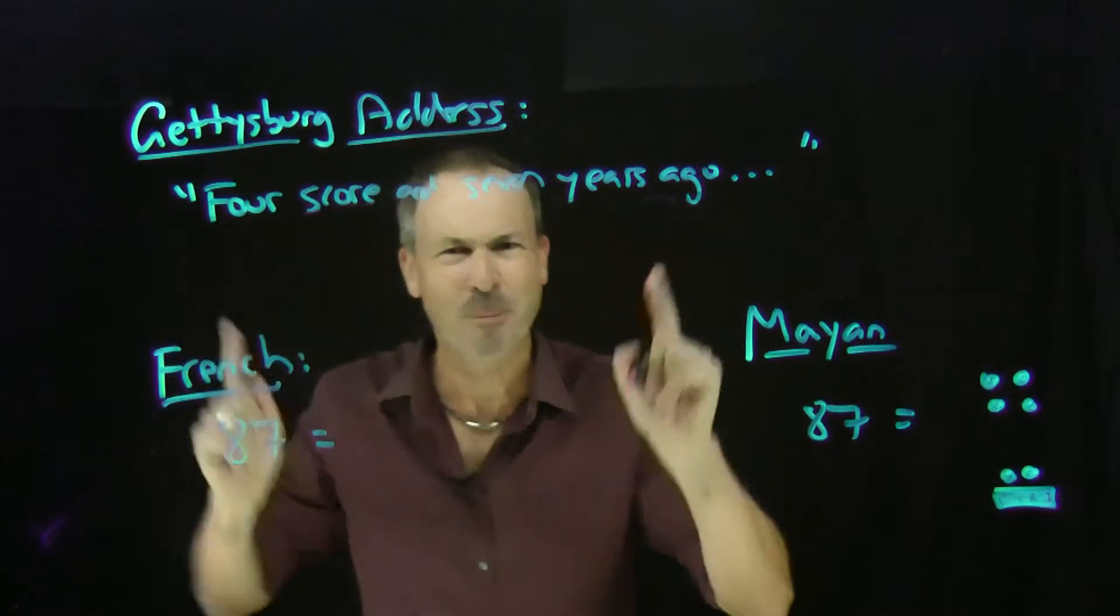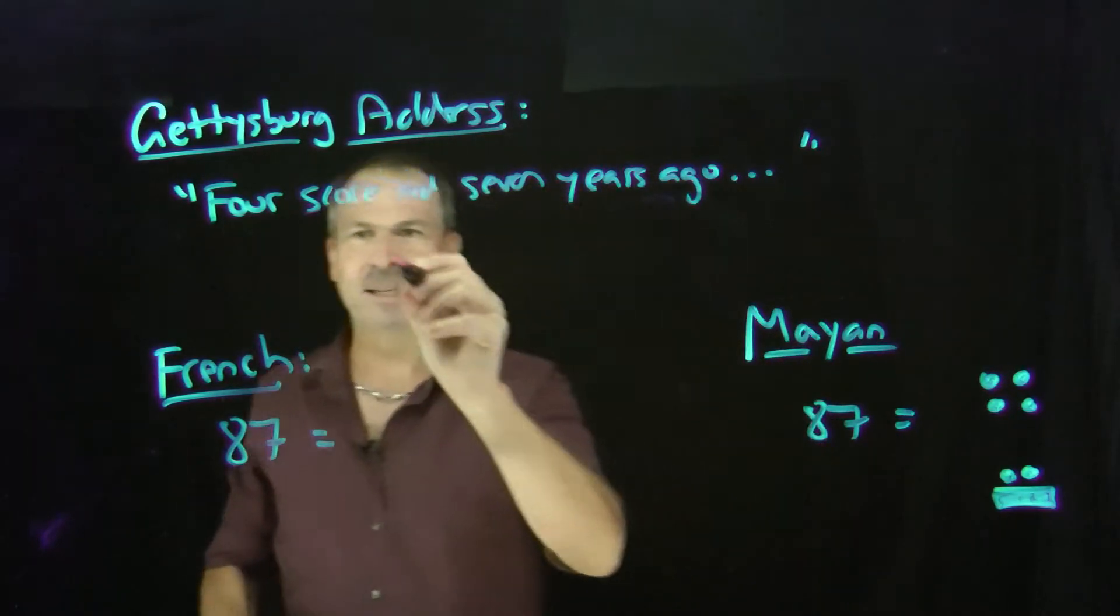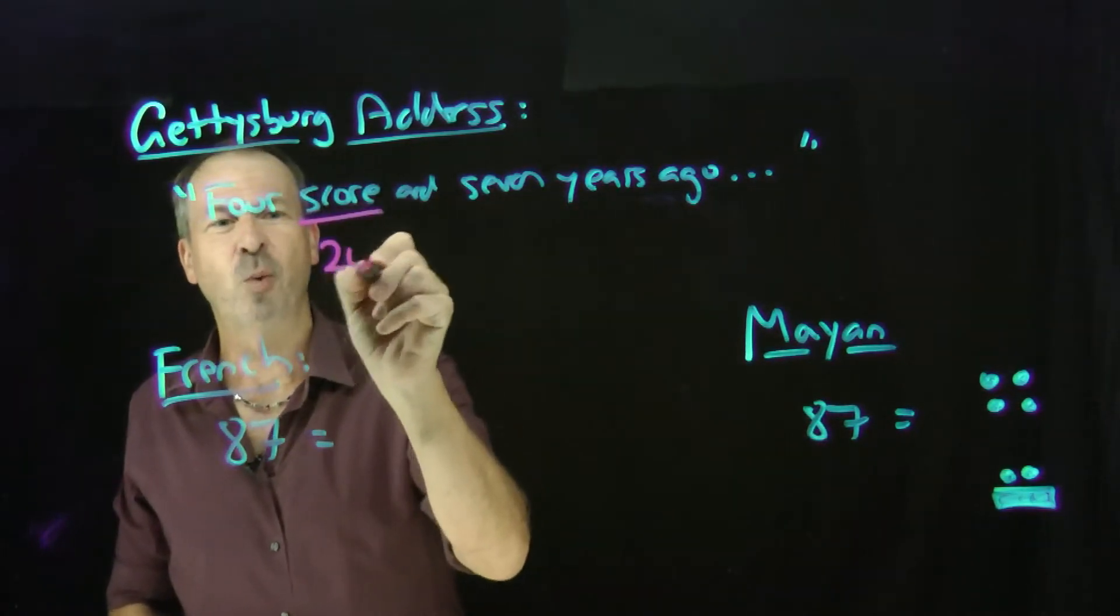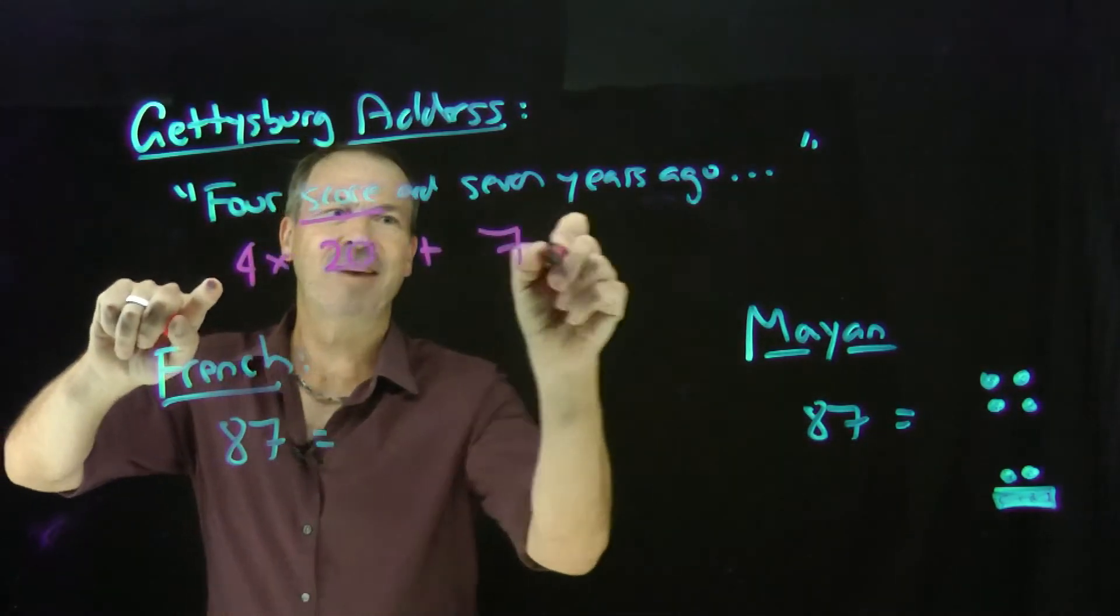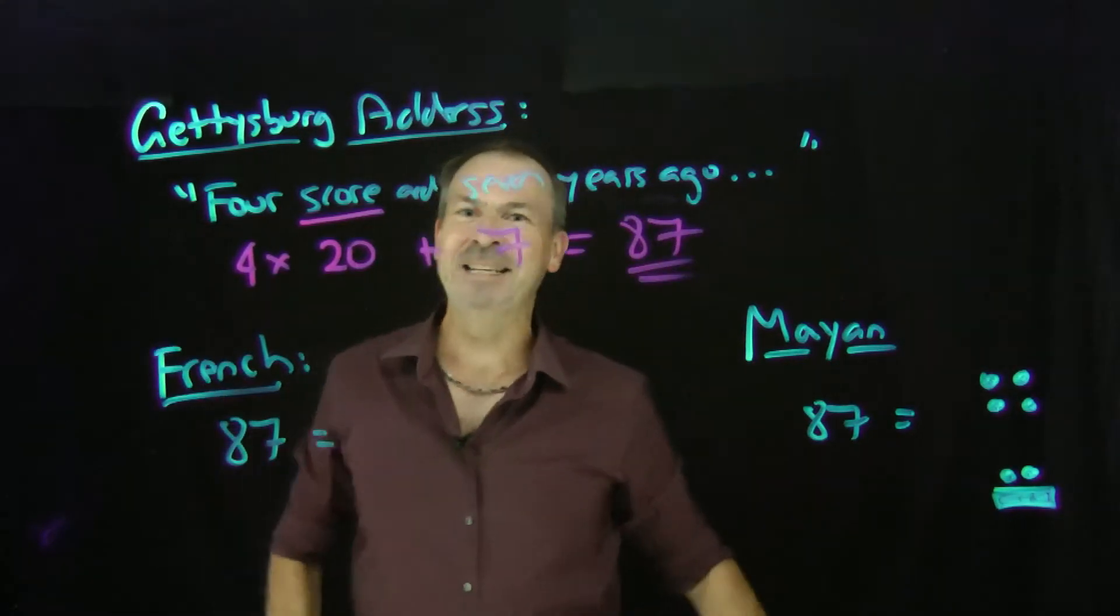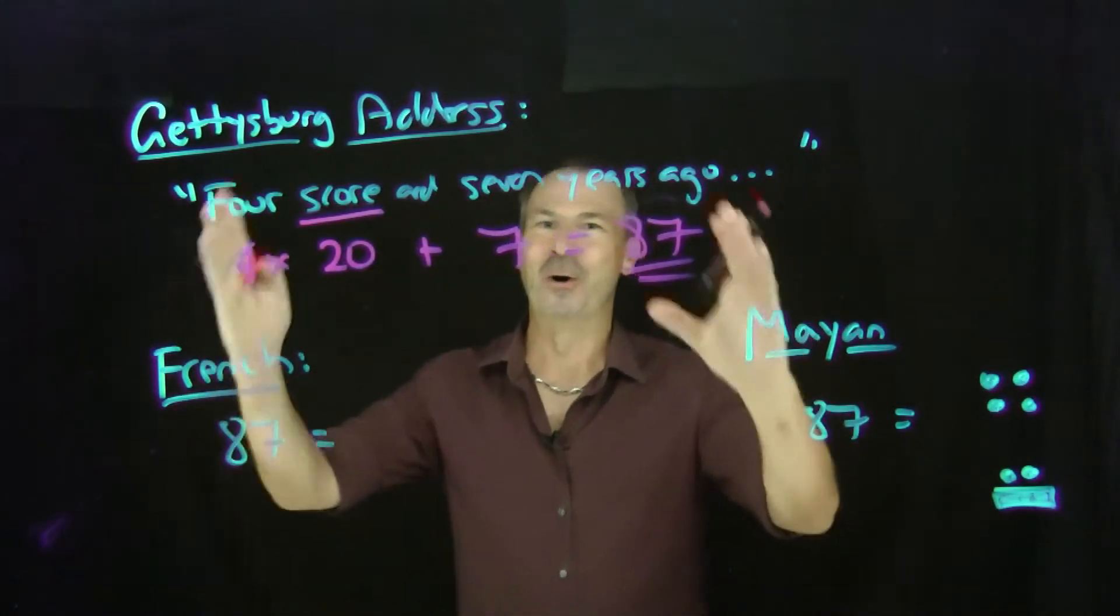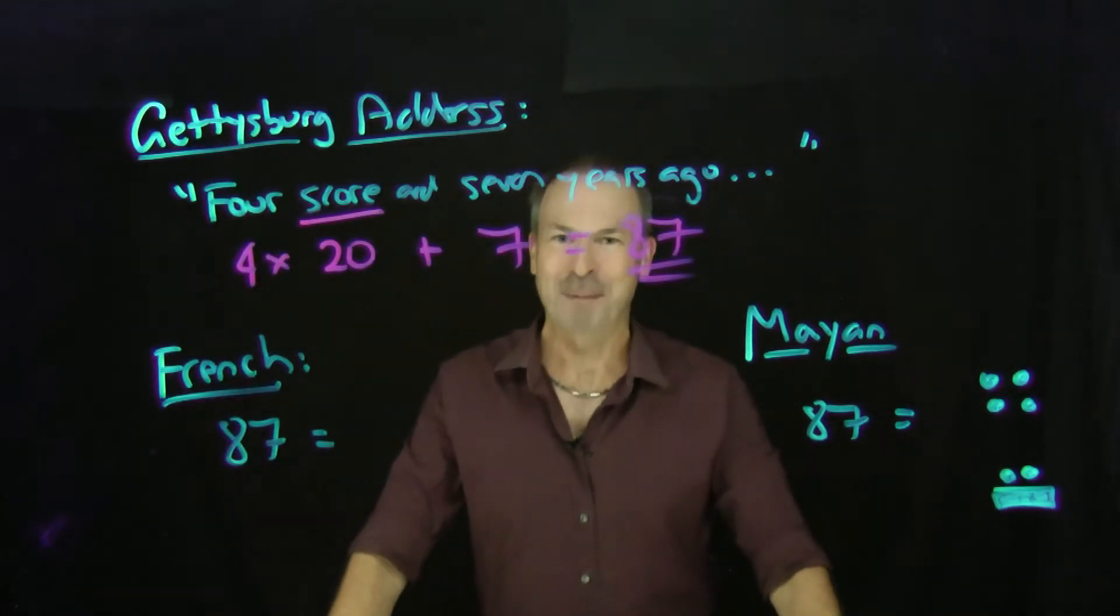How many years is that? What number is he talking about? You look at this for a while and then you realize that score is actually an old word for 20. So Abraham Lincoln is literally saying four twenties and seven years ago. He's speaking about the number 87. Eighty-seven years ago. There's the number 87 in base 20. Abraham Lincoln was speaking base 20.